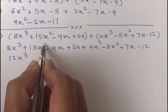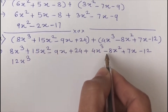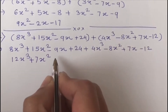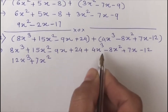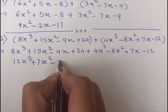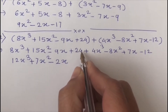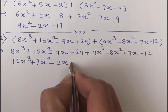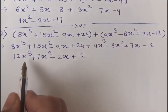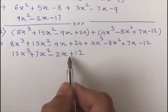Now we have the x squared terms: 15x squared and minus 8x squared. So plus 15 minus 8 gives us plus 7x squared. Then the x terms: minus 9x and plus 7x gives us minus 2x. Finally, the constant terms: plus 24 and minus 12 gives us plus 12. So when we add these polynomials, the answer is 12x cubed plus 7x squared minus 2x plus 12.